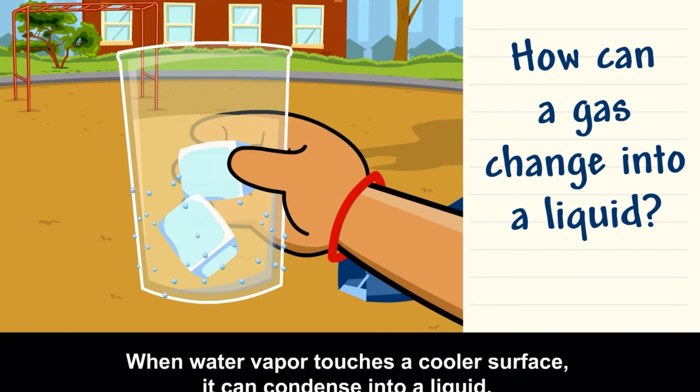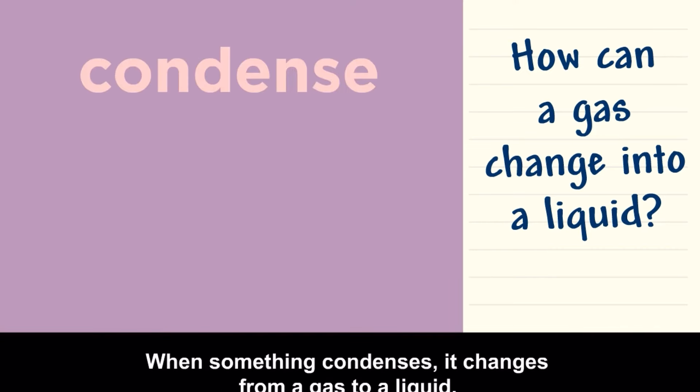When water vapor touches a cooler surface, it can condense into a liquid. When something condenses, it changes from a gas to a liquid.